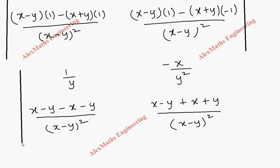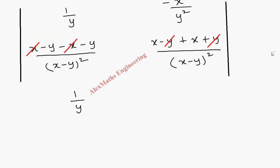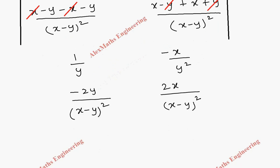Now let's simplify further. In the second element, x minus x gets cancelled and −y+y gets cancelled, giving us −2y/(x−y)². In the fourth element we get 2x/(x−y)². So the full determinant in simplified form has elements: 1/y, −2y/(x−y)², −x/y², and 2x/(x−y)².